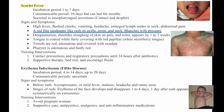The skin desquamates — sheet-like sloughing of the skin on the palms and soles — appearing by one to three weeks. The tongue is coated with a white furry covering with red papillae, known as white strawberry tongue. Tonsils are red, edematous, and covered with exudate. The pharynx is edematous and beefy red. Nursing interventions are contact and respiratory precautions until 24 hours after antibiotics, supportive therapy, bed rest, and encouraged fluids.